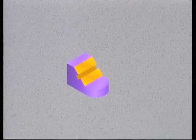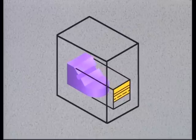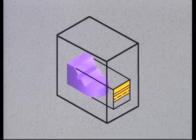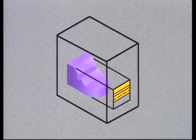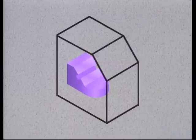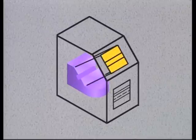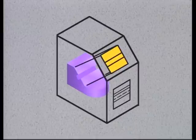An auxiliary view is used to show the true shape and size of an inclined surface. An inclined surface does not lie parallel to any side of the glass box; as a result, it appears foreshortened in the principal views. This presents a problem if the inclined surface contains holes or other important features which must be dimensioned and shown without distortion. So another side is added to the glass box, parallel to the inclined surface, allowing us to look directly at it and see its true shape and size.